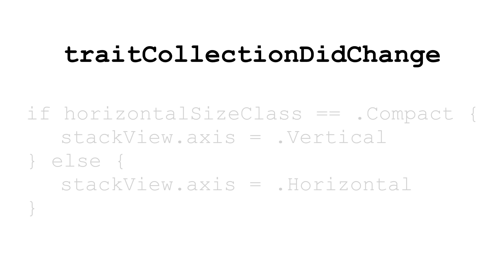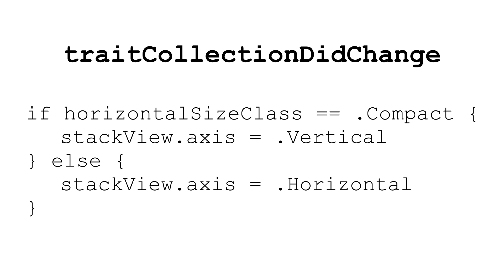Here's why: if you override the traitCollectionDidChange method on a view controller, you can change the axis of a StackView based on the size class. For example, here's some Swift code: if we are moving to compact, become a vertical StackView, otherwise a horizontal StackView. So you can change the StackView's axis whenever you need to based on the size of your view controller — great for going from a full screen app down to a split screen half app or a one-third app or who knows what. You can change your layouts just by changing the axis of the StackView, and iOS will do all the work for you.